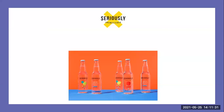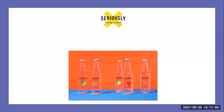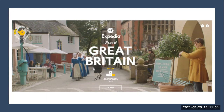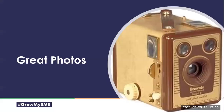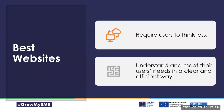Here is an example of a website - Seriously Unsweetened. Look at their home page: great branding, thought-provoking, loaded quickly because there's not much to load, and it's building a brand. Less is more sometimes - this was an award-winning site. Expedia too - again very thematic, a fantastic image that draws you in. When we talk about monetizing your website you actually need to get the traffic in the first place. Think about the website from the customer's perspective, not from yours.